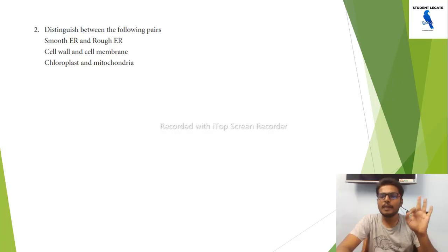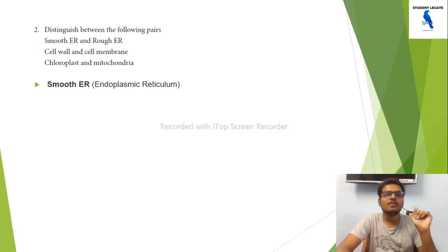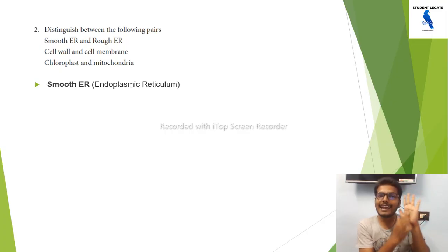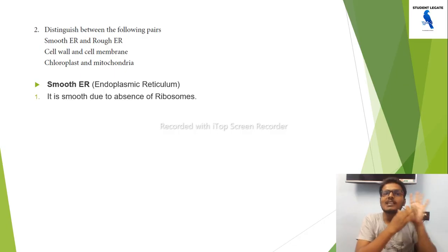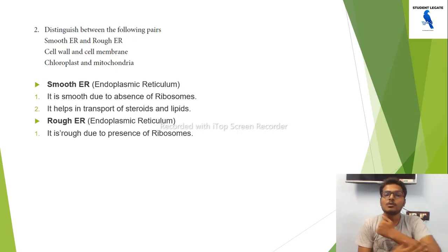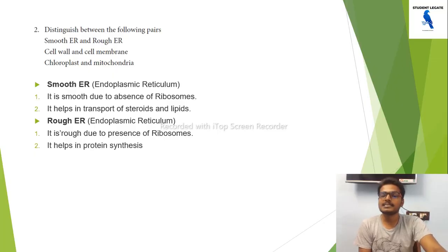Next, distinguish between smooth endoplasmic reticulum and rough endoplasmic reticulum. The smooth endoplasmic reticulum is smooth due to the absence of ribosomes, and it helps to transport a variety of lipids. For rough endoplasmic reticulum, there are ribosomes present on its surface.